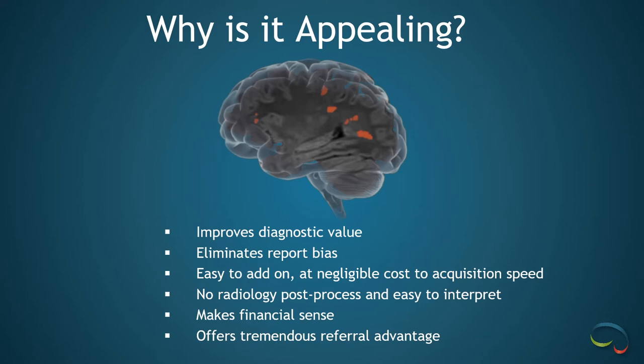These studies are easy to add on to any routine brain MRI at negligible cost to acquisition speed. In fact, the two required sequences are now standard protocol on most all modern magnets. It also makes financial sense. RadNet is the largest outpatient imaging provider in the U.S., and we've looked very carefully at our numbers. We do not lose money on these quantitative volumetric exams. Non-capitated insurance companies are excellent at covering these exams, and the reimbursement more than makes up for any loss with capitated insurance. Overall, we do make a small profit on these exams.